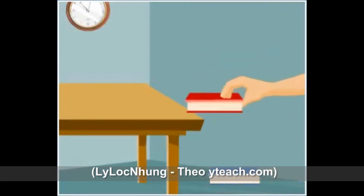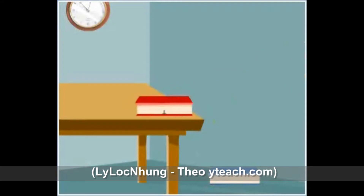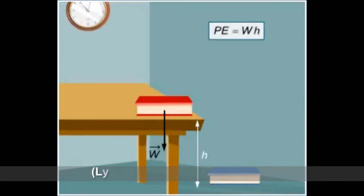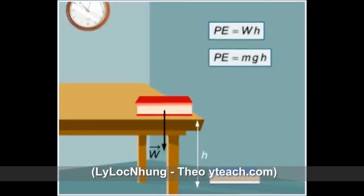Potential energy is equal to the work needed to place a body at a given height, so it can be calculated by multiplying the weight of the body by the height h at which the body is located. Bearing in mind that the weight of a body is the product of its mass and the gravitational acceleration, we obtain the formula PE = mgh.